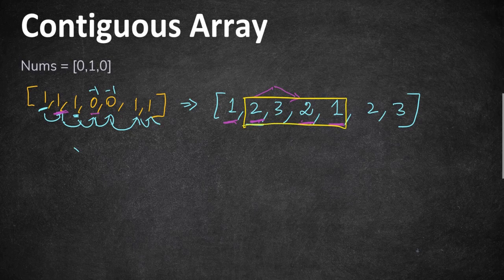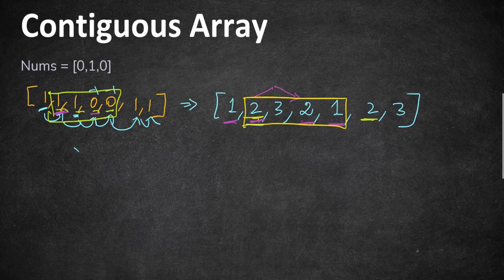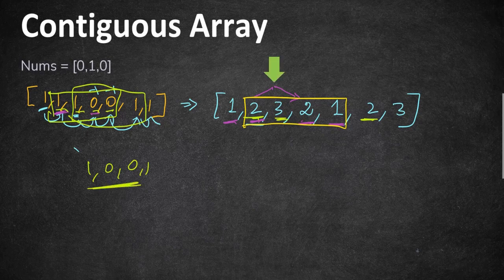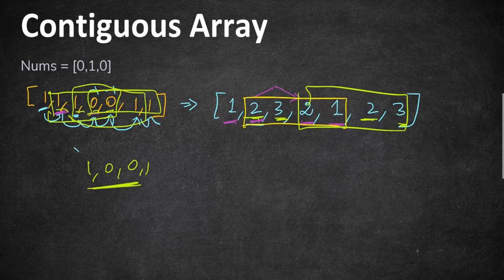In the given input array, from the second position to where we see the same prefix sum value again, there exists a subarray with equal ones and zeros. Similarly, from one occurrence of sum value 2 to the next, the subarray in between — for example 1,0,0,1 — also satisfies the condition. This is the core logic: calculate the prefix sum and find where equal values occur.